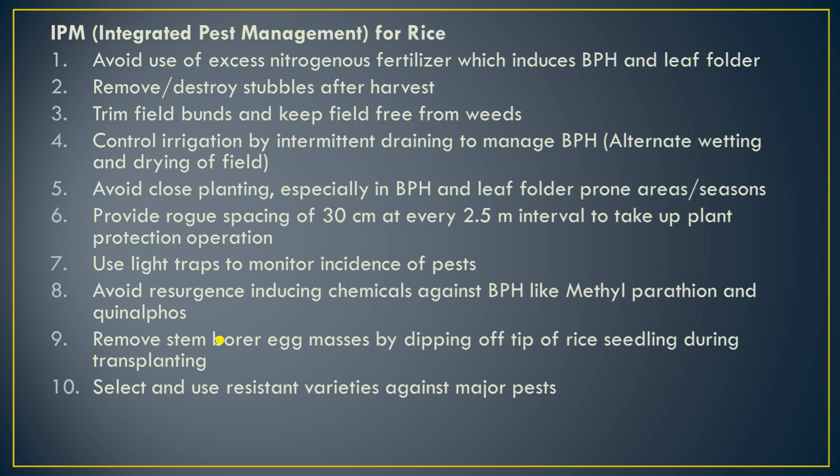Yellow sticky traps or blue sticky traps can also be used. Avoid resurgence-inducing chemicals against brown plant hopper (BPH), like methyl parathion and quinolphos. These chemicals should be kept away from rice fields and avoided because they can promote BPH resurgence.